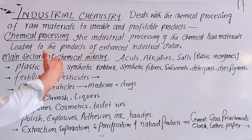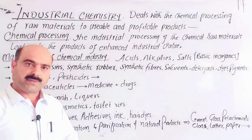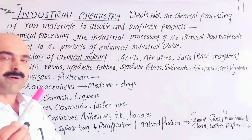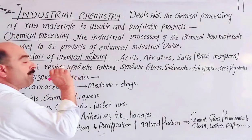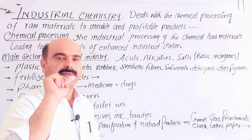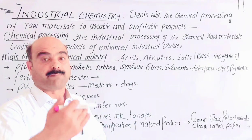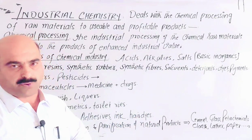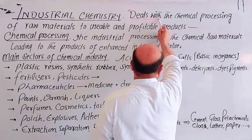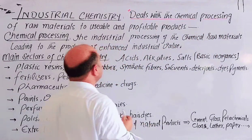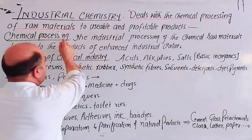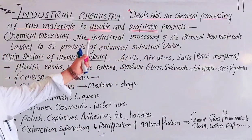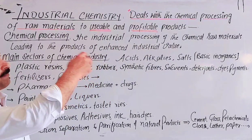Dear students, industrial chemistry — first of all, I would like to define industrial chemistry. Basically, in industrial chemistry we deal with and study industrial products, industrial processing, the raw materials used for the processing of end products, and the various steps and chemical reactions involved, as well as intermediate steps. The branch of chemistry which deals with the chemical processing of raw materials — basic material — to usable and profitable products. In industrial chemistry we study chemical processing, chemical procedures, and chemical processes.